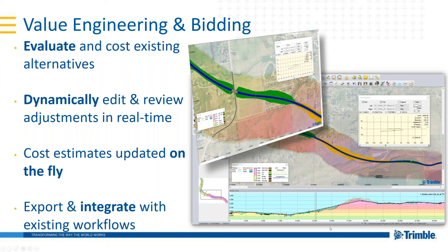From a value engineering and bidding perspective, you can bring in an existing alignment, drop it into the system, and it will cost it straight away — calculating templates, earthworks, and costs based on the alignment, then optimizing based on geometric and engineering criteria. You can also make very fine-tuning manual adjustments and see the cost impacts on the fly. Rather than waiting hours for answers, the system very quickly generates an optimal alignment and lets you manually adjust it as well.